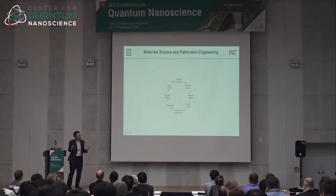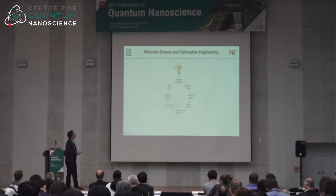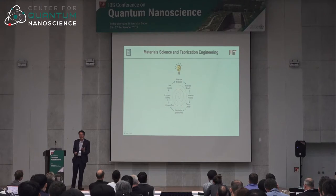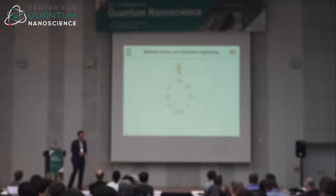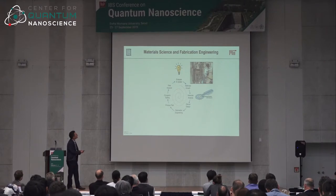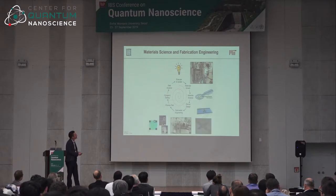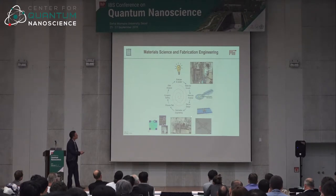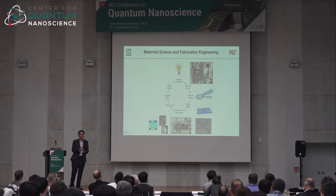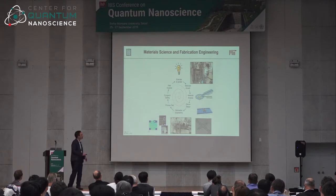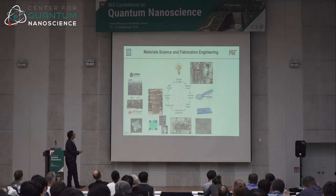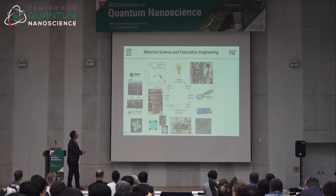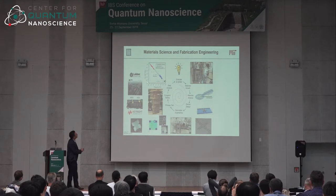It's a virtuous but difficult cycle. You identify a defect you want to eliminate, grow materials that ideally don't have it, confirm that analytically, then do device design and fabrication — which is key because you can start with pristine material and reintroduce all the defects during fabrication. Then you test using dilution refrigerators, electronics, and software. Finally, you determine whether you made an improvement through noise spectroscopy, update your understanding, and iterate until you've eliminated a noise source.